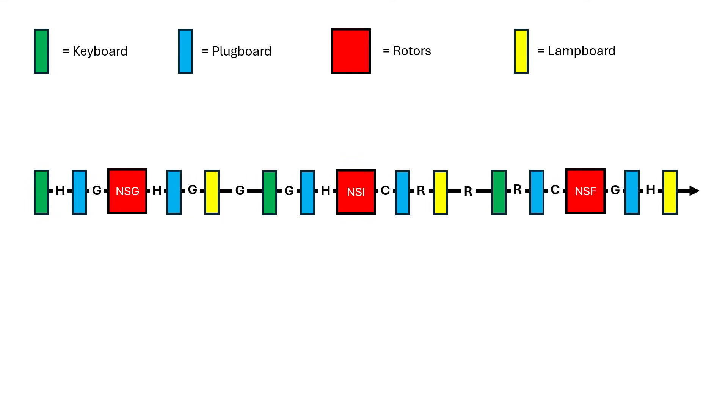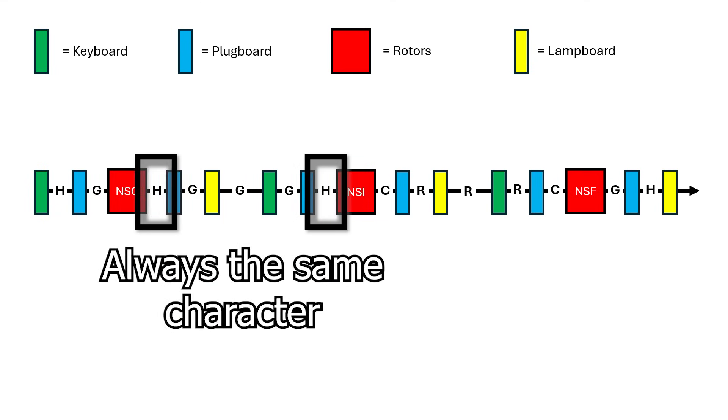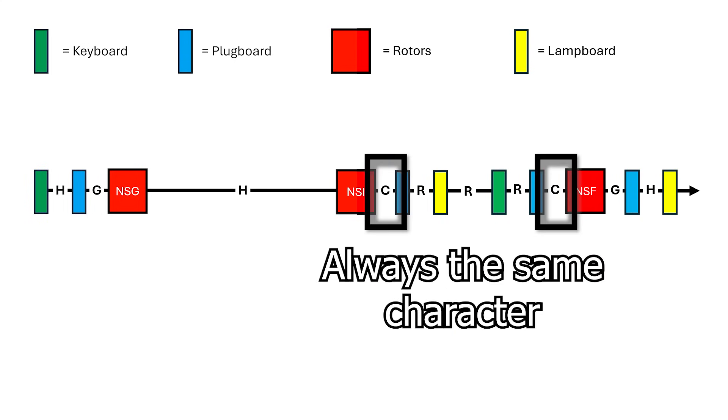When we unroll these loops, we can see that nearly all of the plugboard settings cancel each other out, and we can use this to search for possible rotor settings that infer the plugboard settings associated with this potential solution.